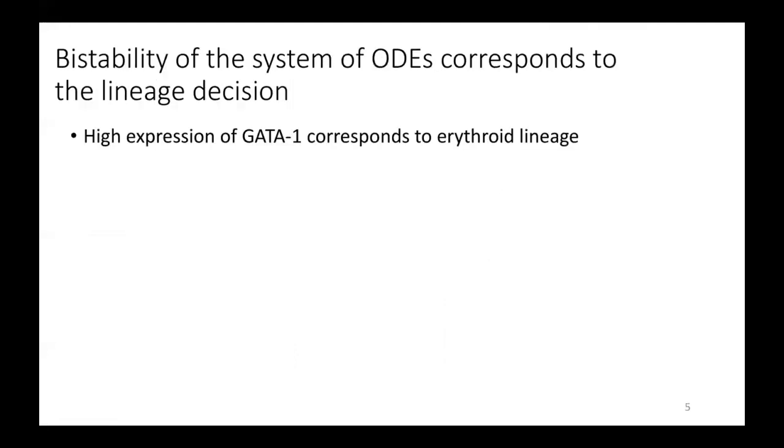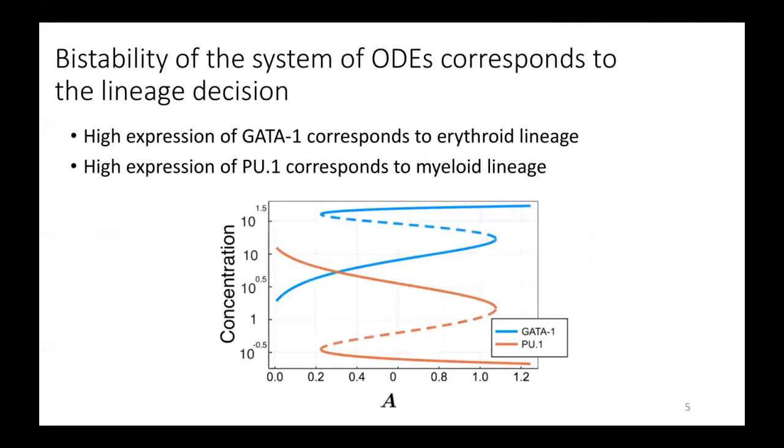This system of ODE exhibits bistability, and each stable steady state corresponds to a certain lineage. So the stable steady state where there's high expression of GATA1 corresponds to the erythroid lineage, and then high expression of PU1 corresponds to the myeloid lineage.